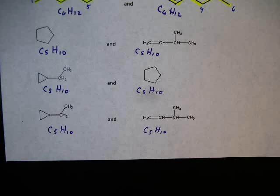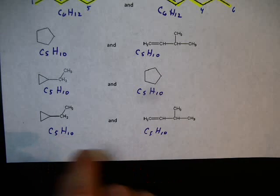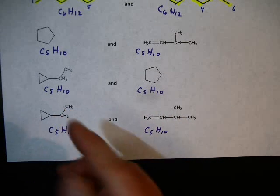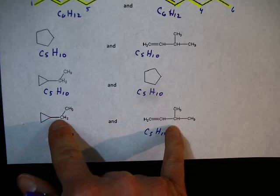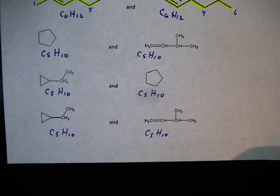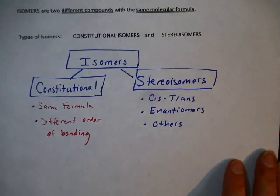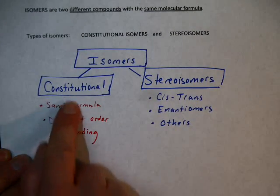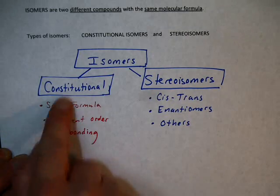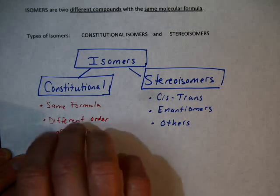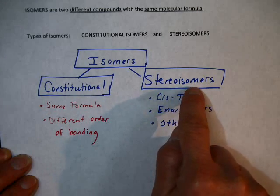So constitutional isomers have the same formula, different names, different chemical and physical properties, and different order of bonding. What we just did was give examples of this type of isomer. There are two types of isomers, and we've just talked about constitutional isomers. In the next video, let's take a look at stereoisomers.